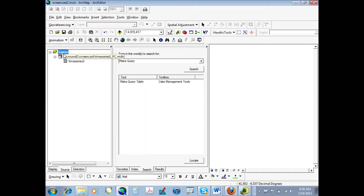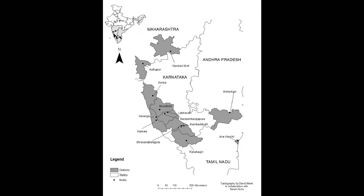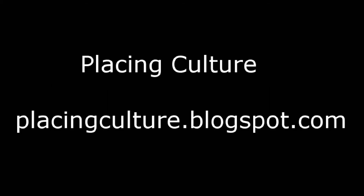If you're still confused about what GIS is or what you can do with it, please check out the next screencast, where we'll take a more practical approach and interview a religious historian who is just getting started with GIS. We'll look at how she began exploring these questions and what spatial direction she's taking her research. That's it for today. My name is David Meek — you can contact me at dmeek.uga.edu or visit Placing Culture at placingculture.blogspot.com. Thanks for checking out this screencast.